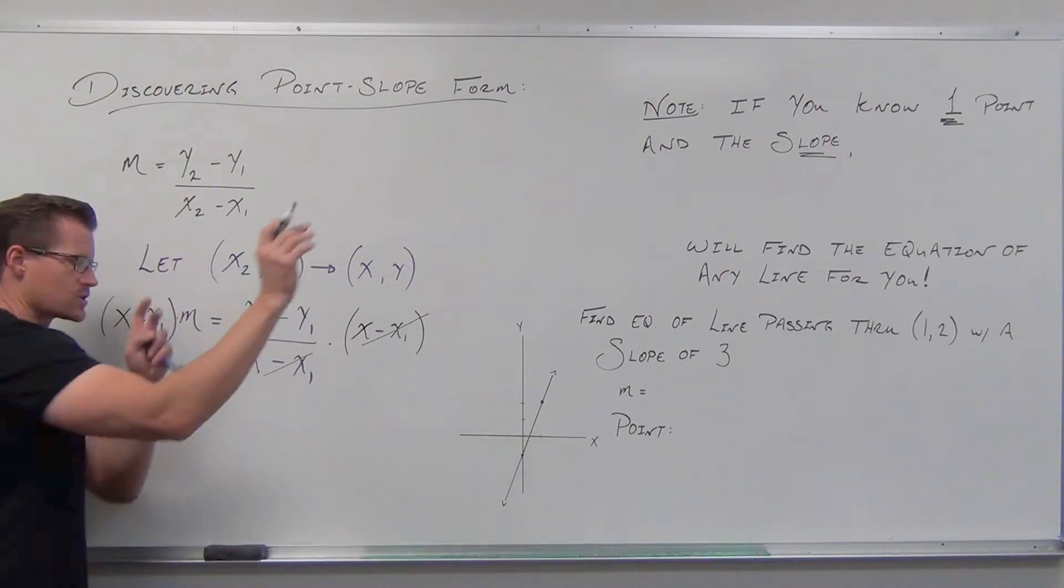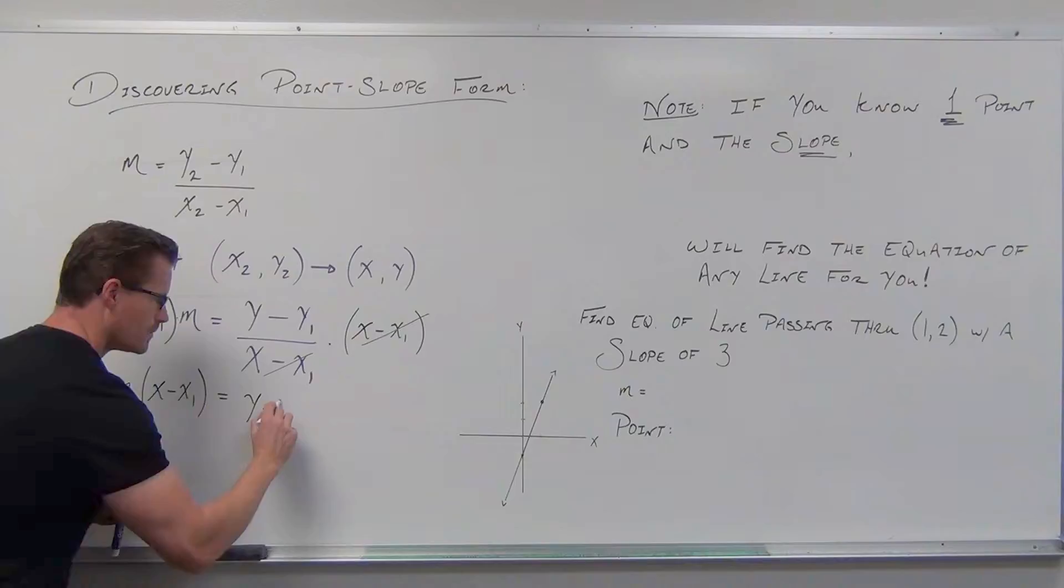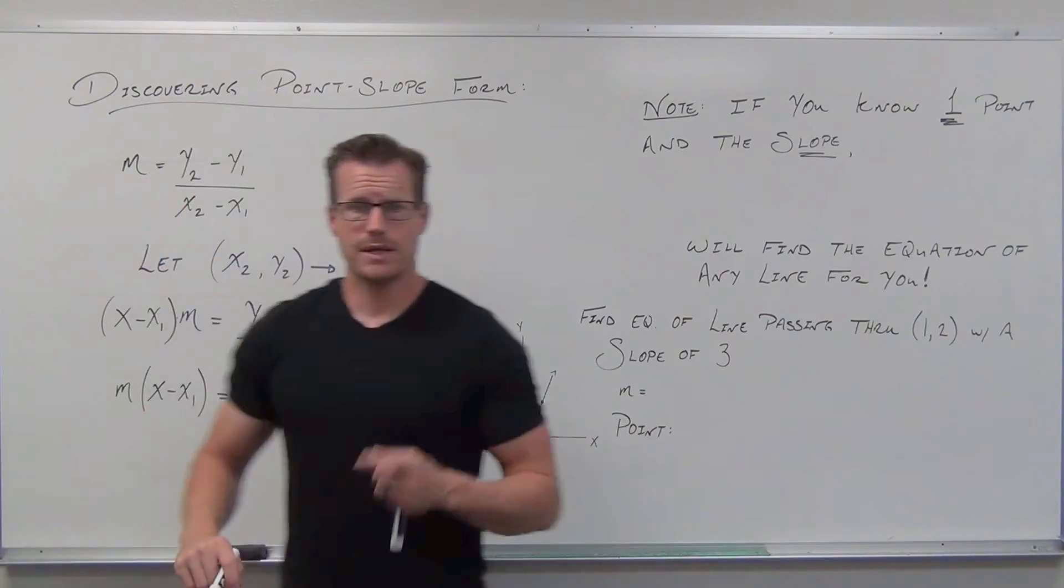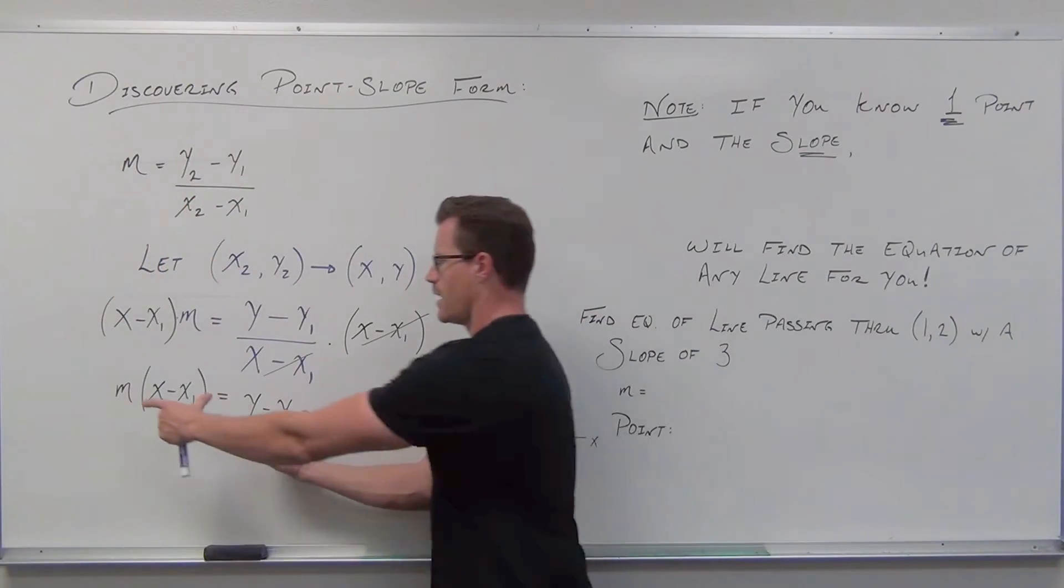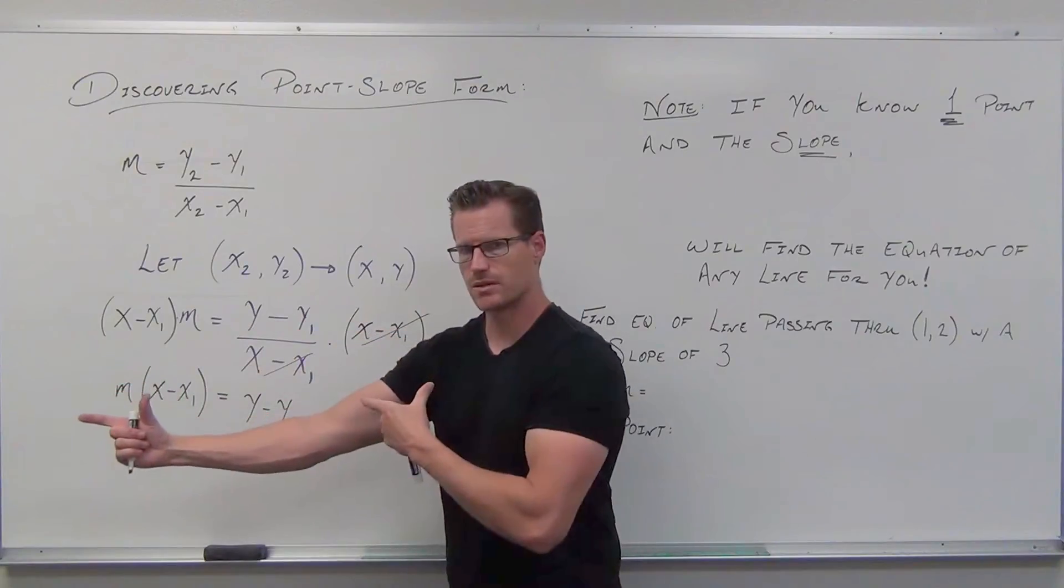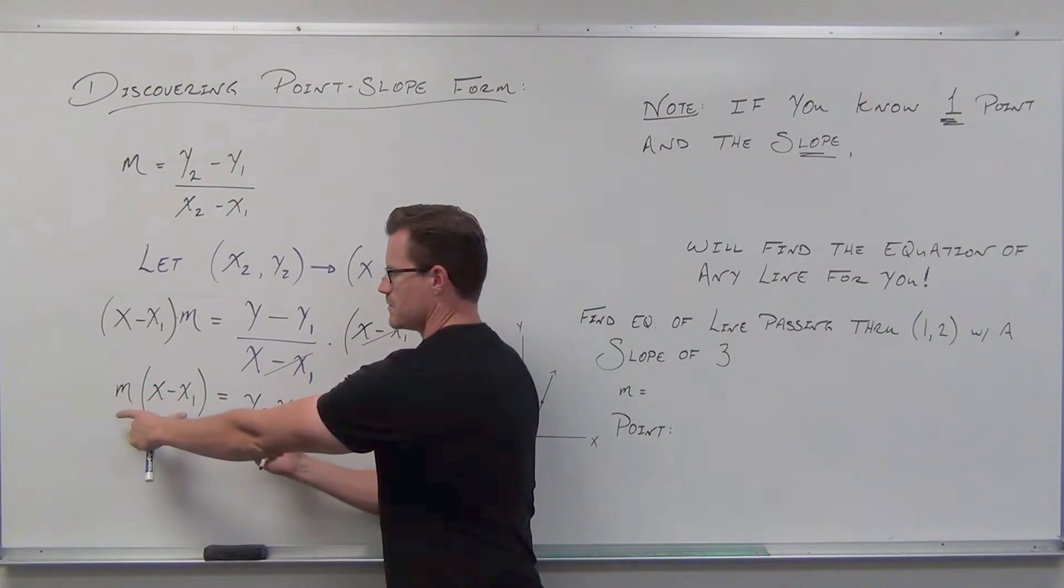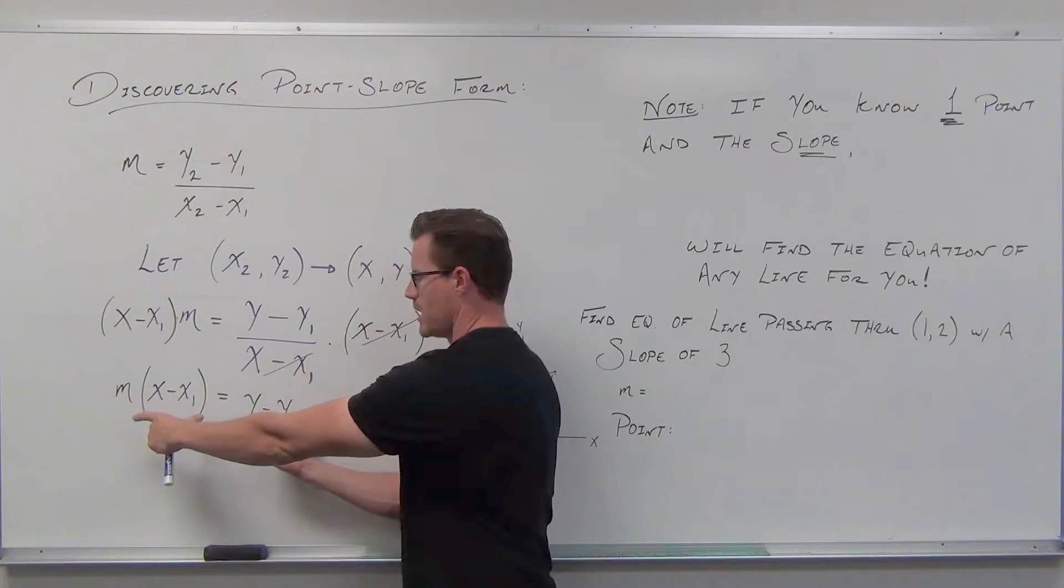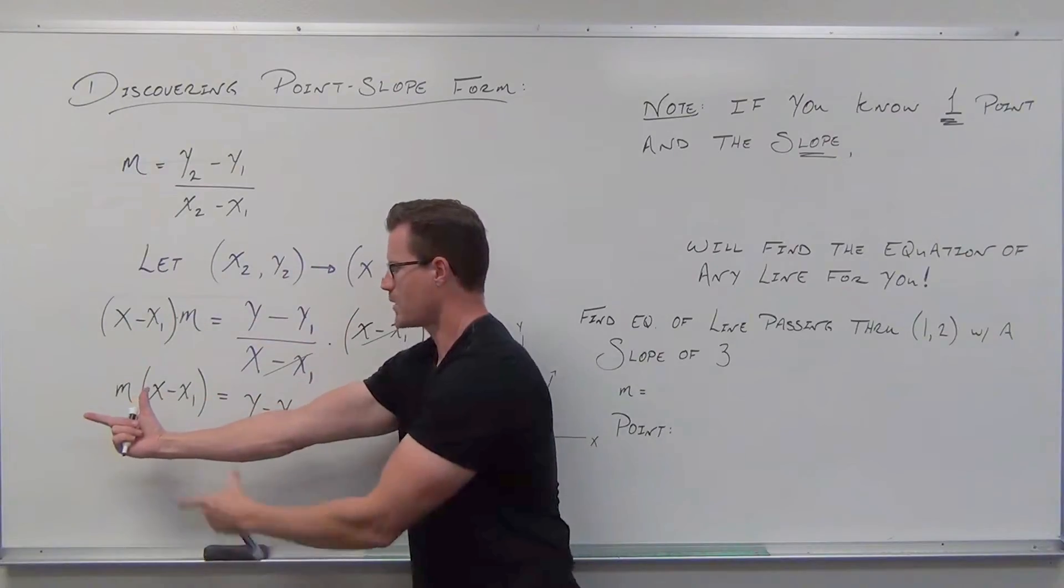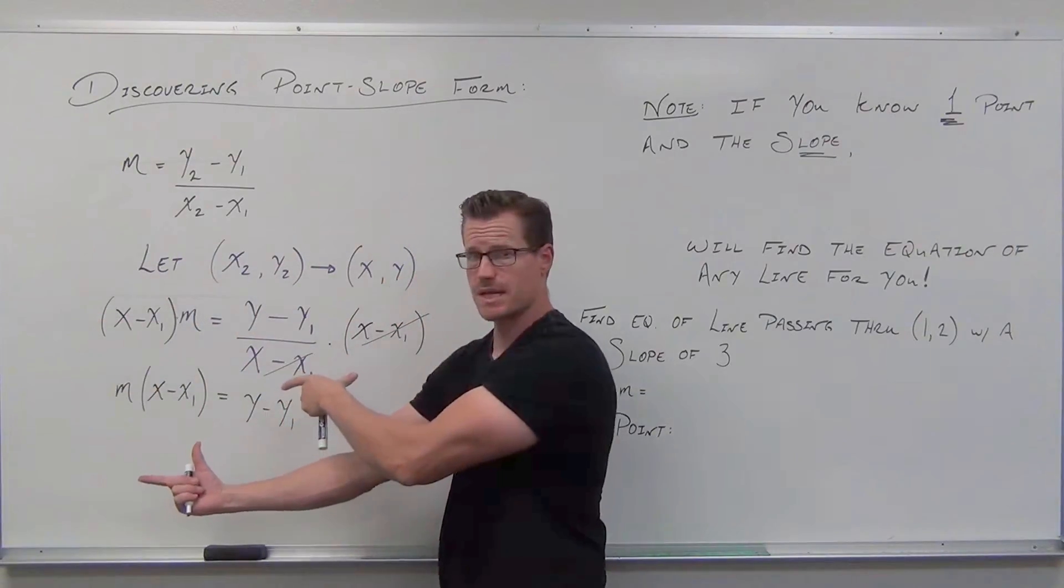On the right-hand side, my fraction is gone. There's only one other thing I'm going to do. I'm going to completely switch sides on this. So, instead of m times x minus x1 equals y minus y1, I'm going to have y minus y1 equals m times x minus x1.